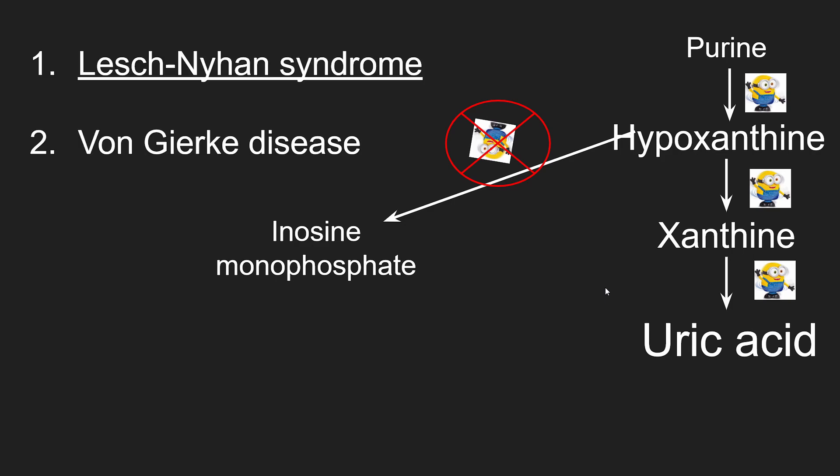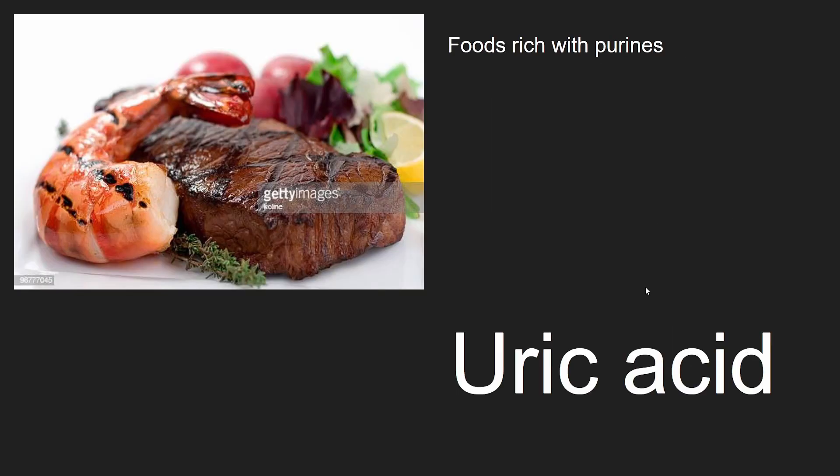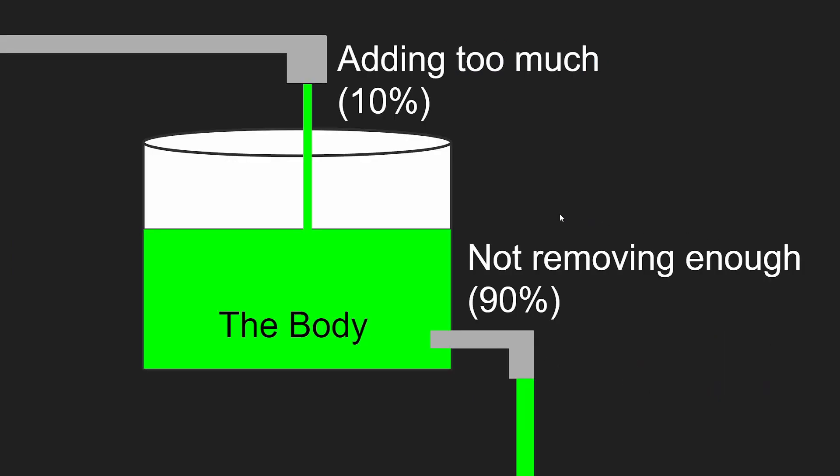This specific disease is called Lesch-Nyhan syndrome. Another disease that has a similar effect is Von Gierke disease. Lastly, we could add too much uric acid from the foods that we eat. Two groups of foods that are known to contain an abundance of purines are red meat and seafood. Alrighty, we have covered the ways too much uric acid could be added to the body.